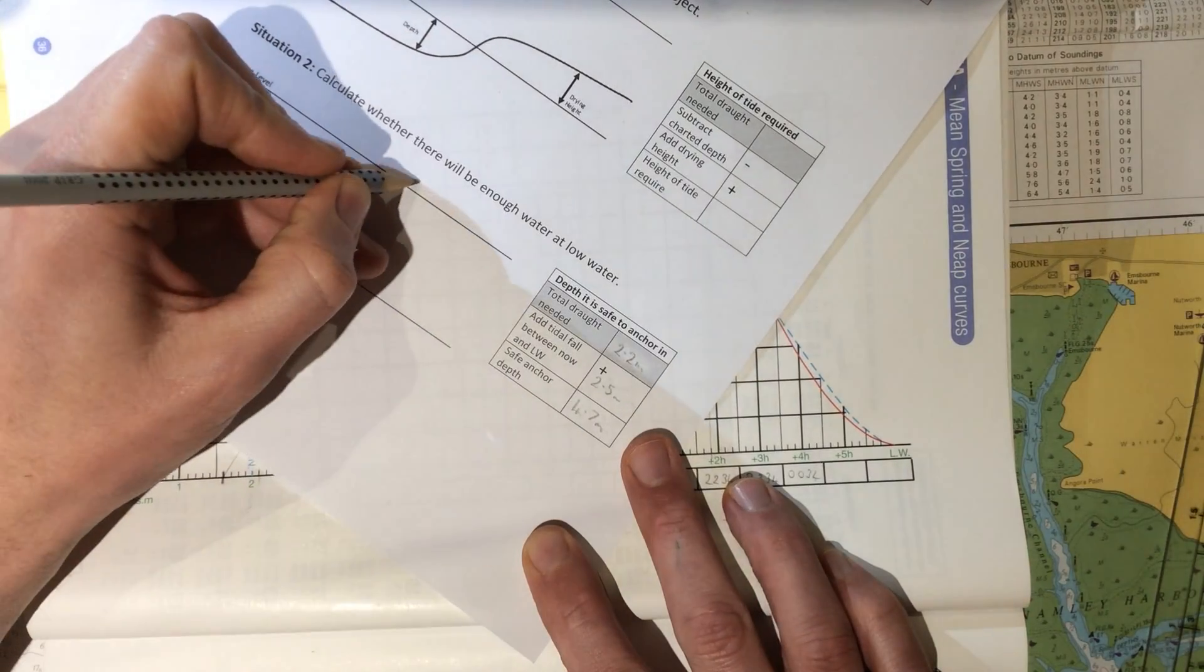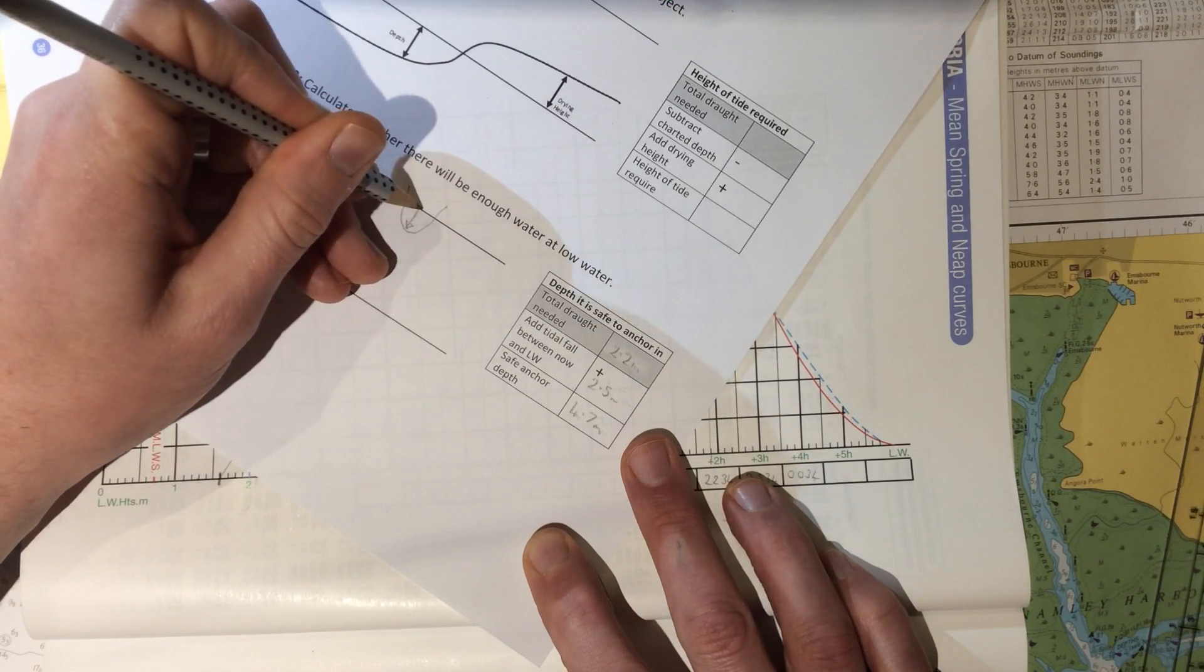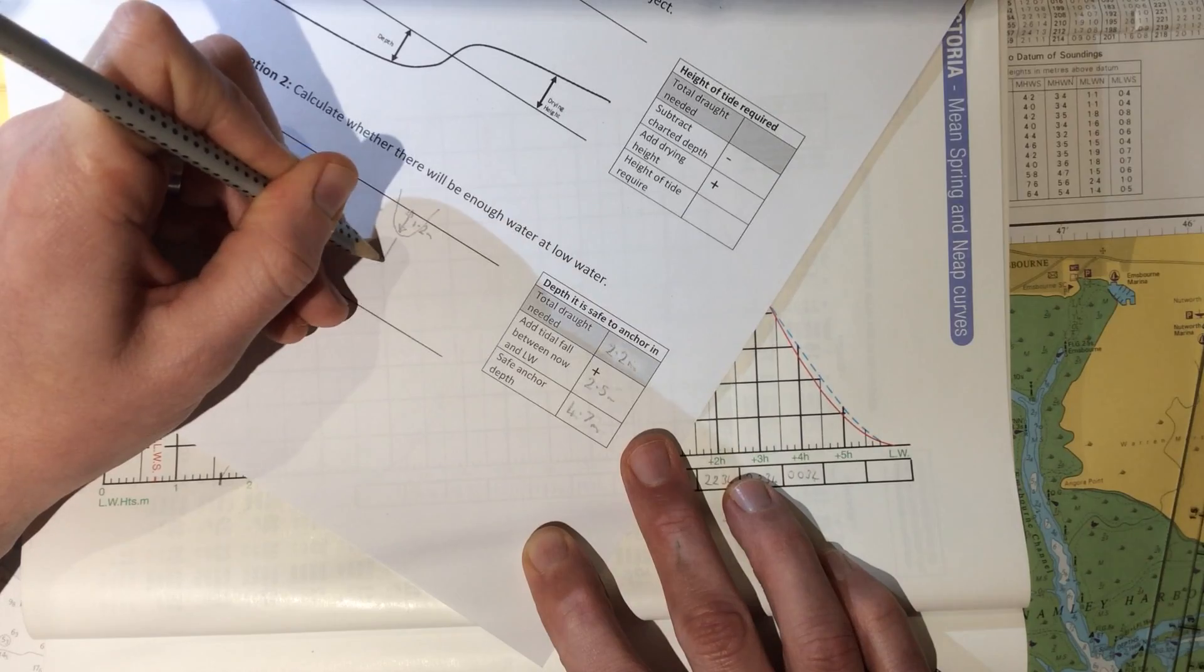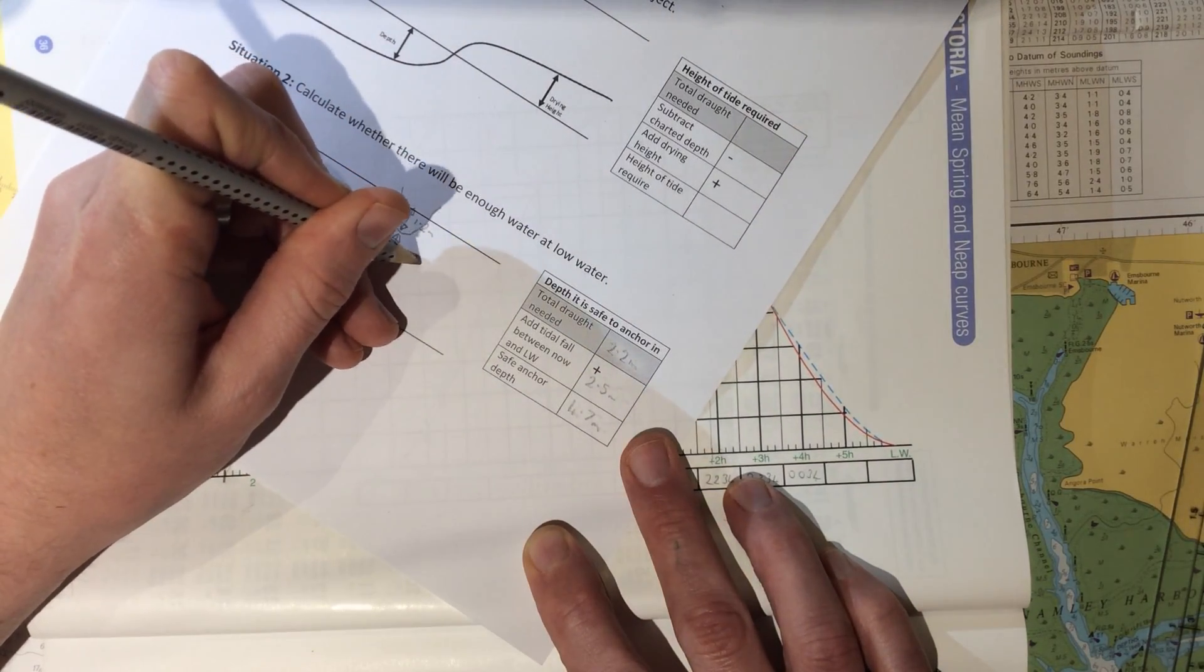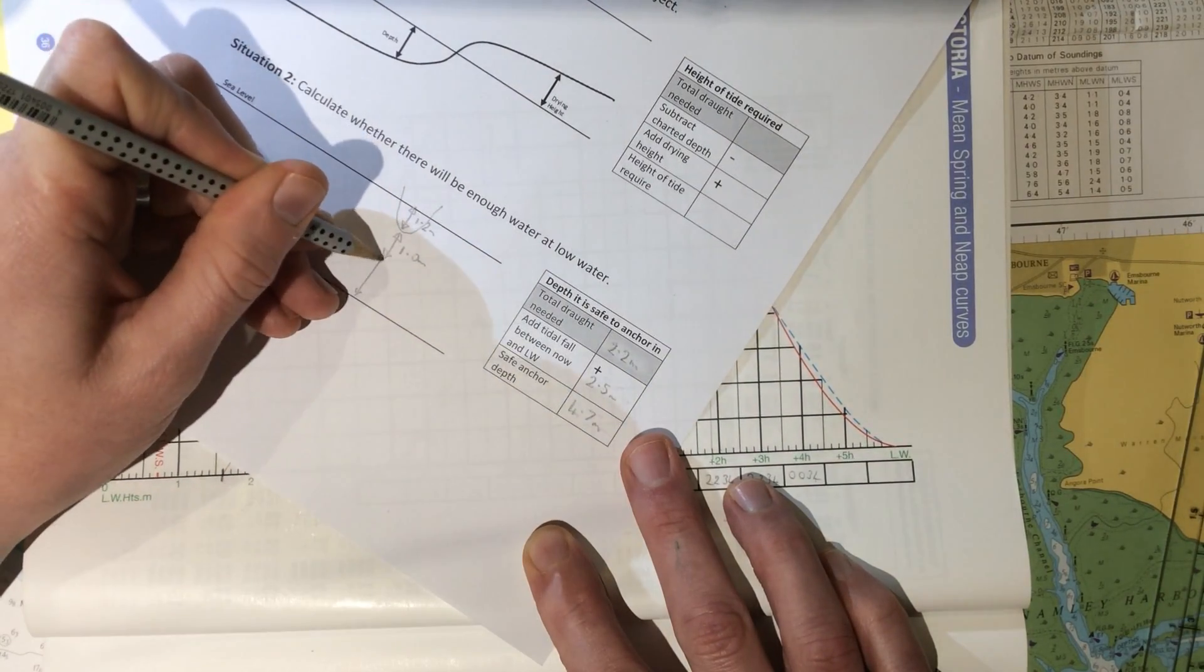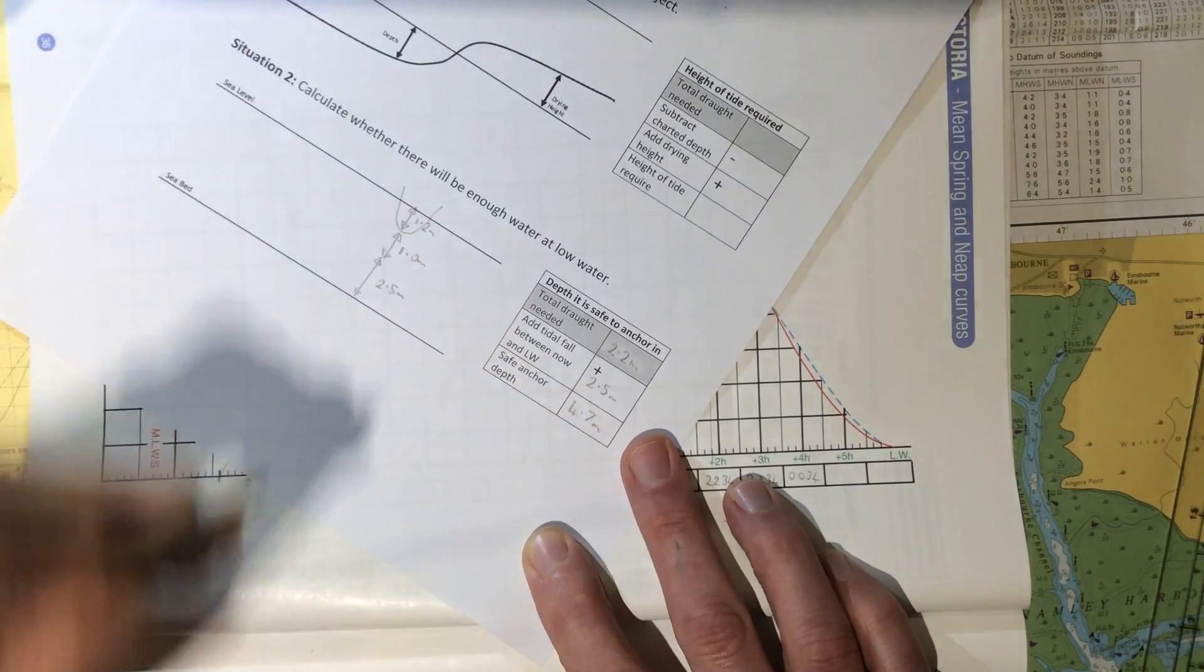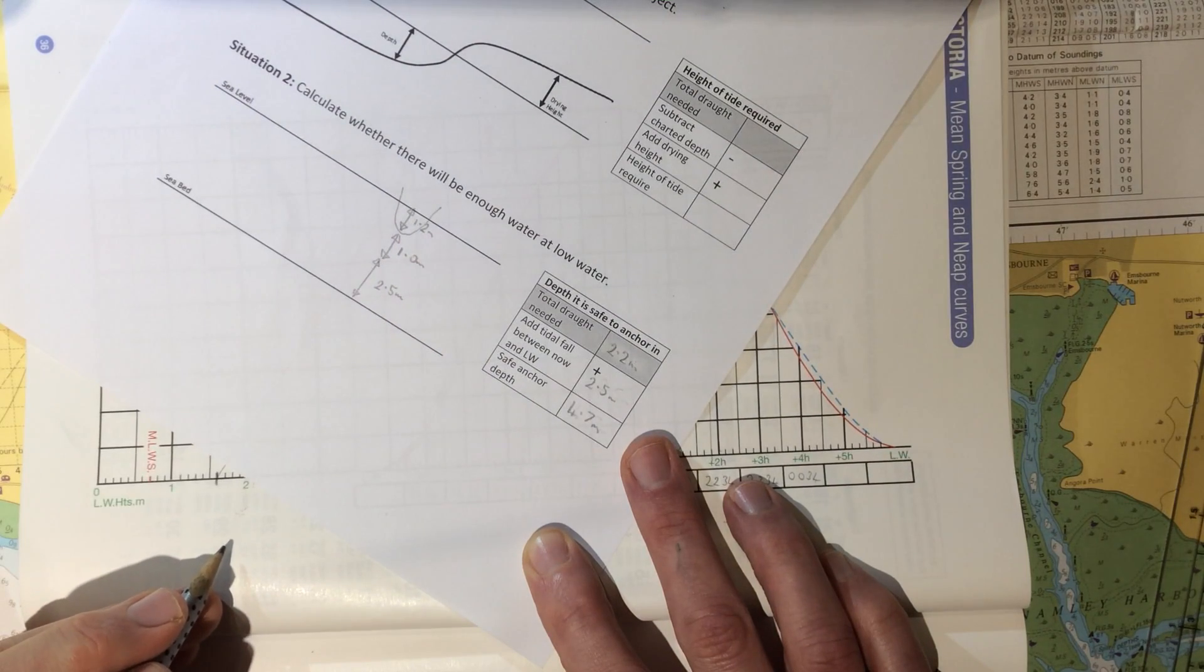It's useful again to confirm this by drawing a diagram. You can see that our boat is drawing 1.2 metres. We'd like a clearance of 1 metre, and the tide is going to fall by 2.5 metres. So you can see that we add these three together to establish how deep the water should be now for us to have clearance at low water.